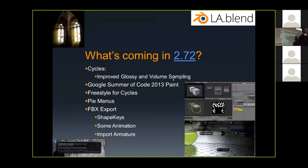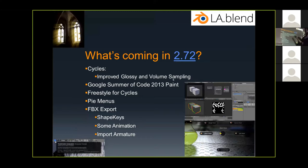I'll talk a little bit about what's coming in version 2.72 — I put a question mark here because nothing's ever final until they ship the code. It looks like a relatively modest release. There's improved glossy and volume sampling in Cycles. Volumetrics was recently added to Blender and there's some optimization happening — I've used volumetrics and it requires a decent amount of CPU to render, so I'm glad that's happening. We're also seeing Summer of Code 2013 paint features being added.